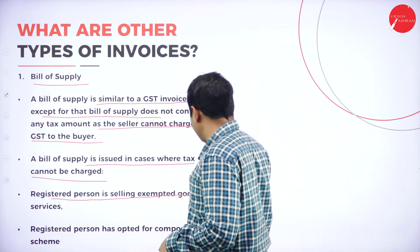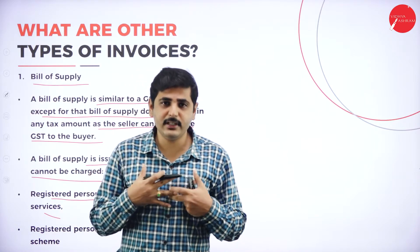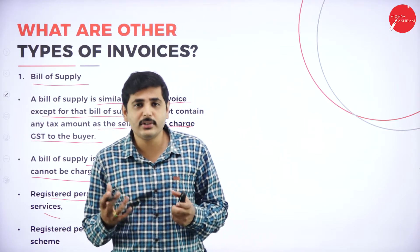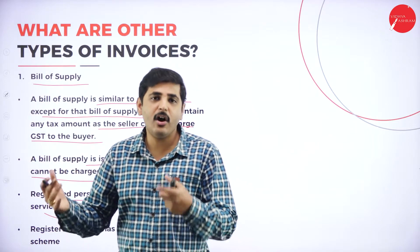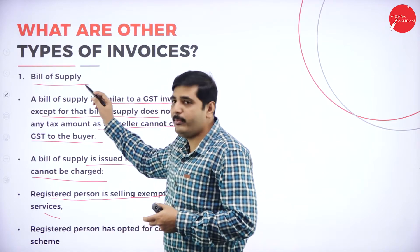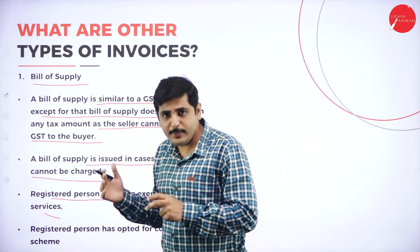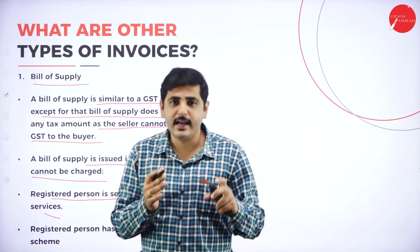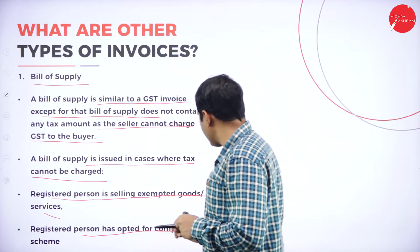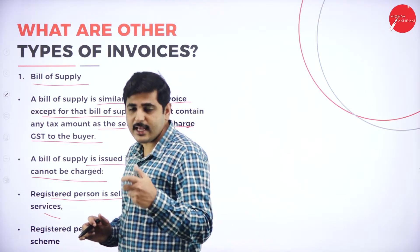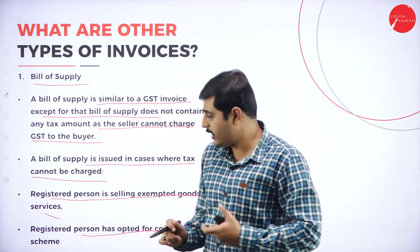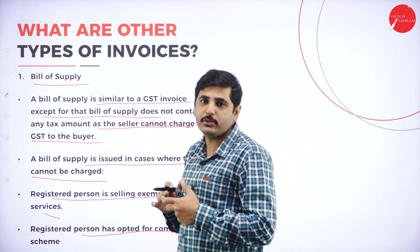A registered person selling exempted goods or services will issue a bill of supply. For example, I am the registered person. If I am selling agricultural products or milk — those goods are exempted from the tax purview — then the bill of supply will be issued and the tax invoice will not be issued. Only taxable products warrant a tax invoice. Also, if a registered person has opted for the composition scheme instead of the forward scheme, then also they will issue a bill of supply.